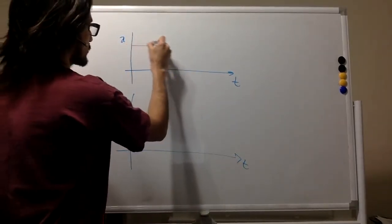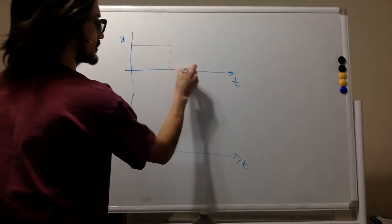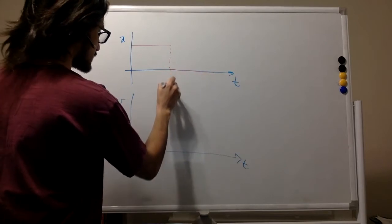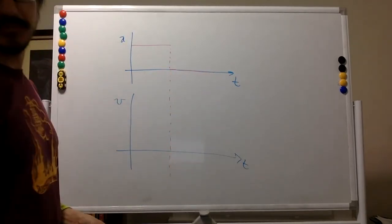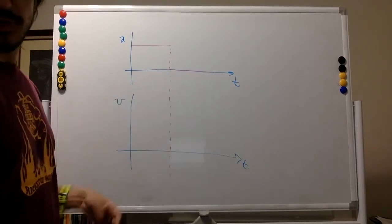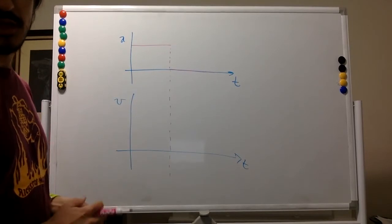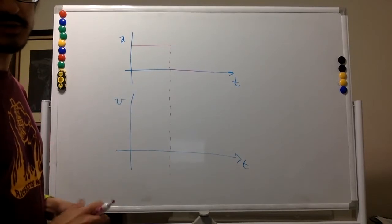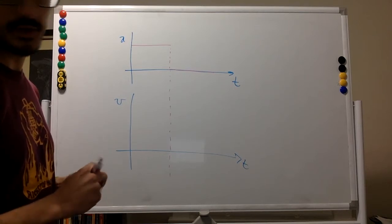So four seconds of constant acceleration and then the acceleration is zero. After four seconds the sprinter reaches top speed and can run the 100 meter dash in 10 seconds. What is his speed as he crosses the finish line?